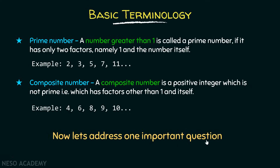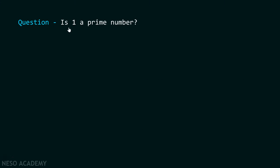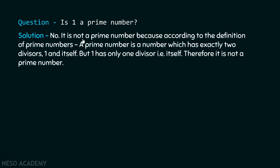Now let's address one important question: is one a prime number? No, it is not a prime number. Because according to the definition of prime numbers, a prime number is a number which has exactly two divisors — one and itself. This is a very important point to note. But one has only one divisor, that is itself. Therefore, it is not a prime number.